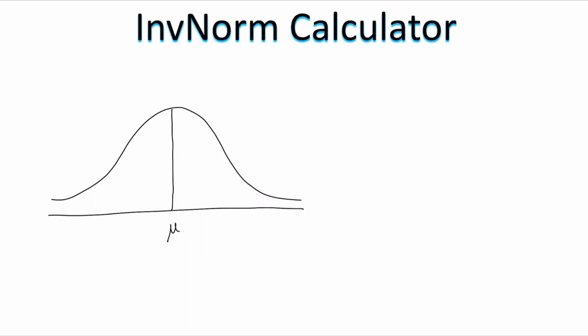When we did problems on normal distribution we were given an x value on our horizontal axis and our job was to figure out the area either above or below. What we're doing this time with the inverse norm is that we are given the area. So if I tell you the area of the shaded region is 0.28, our job is to figure out at what value of x that is going to be true.